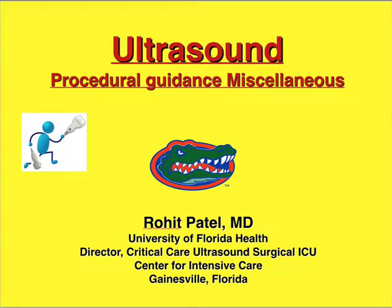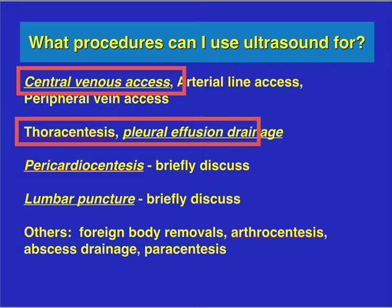In this lecture we're going to talk about procedural guidance miscellaneous. This is a pretty short lecture covering a few procedures that can be guided by ultrasound. Central venous access, thoracentesis, and pleural effusion drainage were discussed in other lectures linked to this module. In this one, we will talk about pericardiocentesis and lumbar puncture. Other procedures like foreign body removal, arthrocentesis, abscess drainage, and paracentesis are fairly easy extensions once you learn the core procedures, and good online videos are available as learning tools.